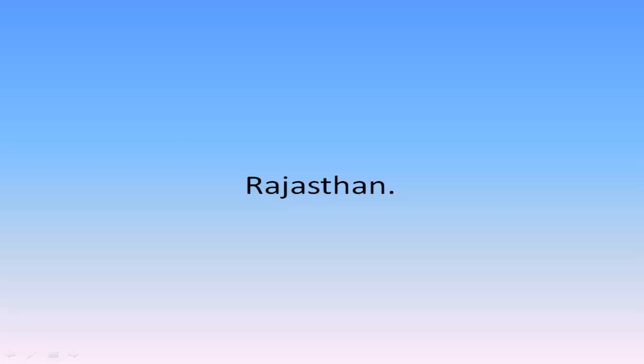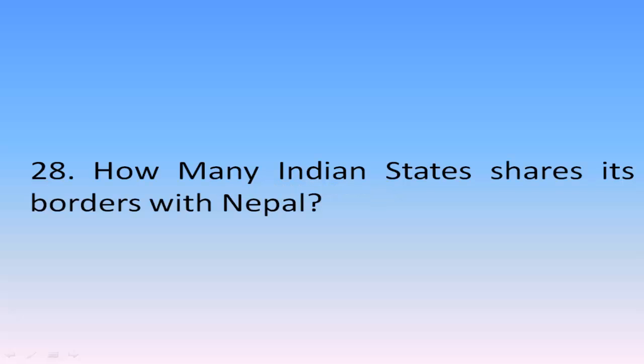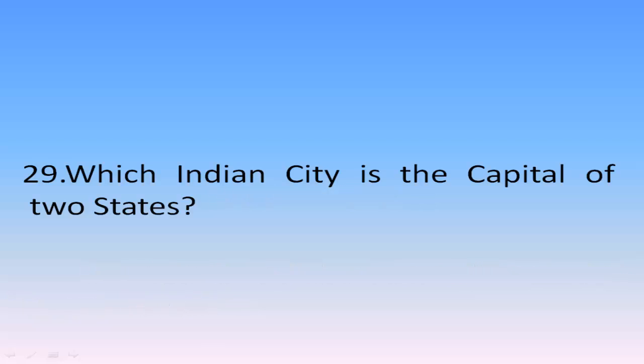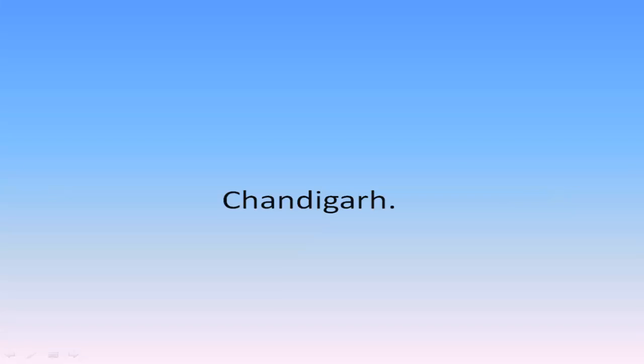How many Indian states share a border with Nepal? 5 Indian states — Uttar Pradesh, Uttarakhand, Bihar, West Bengal, and Sikkim. Which Indian city is the capital of two states? Chandigarh. Chandigarh is the shared capital of both Punjab and Haryana.